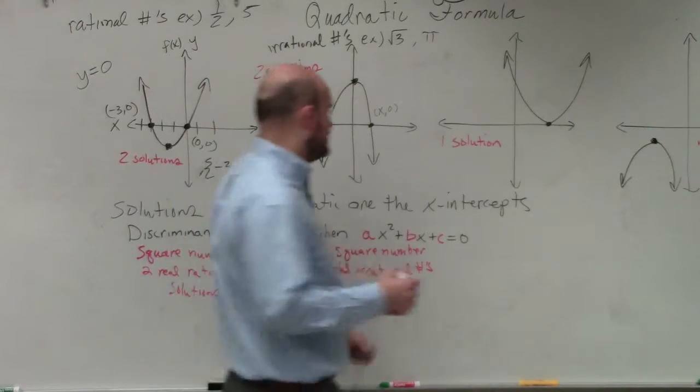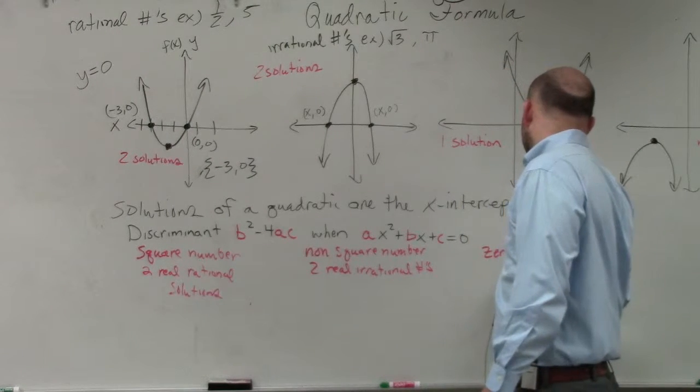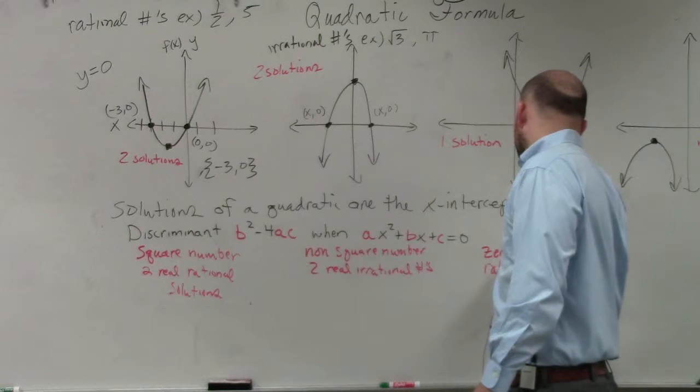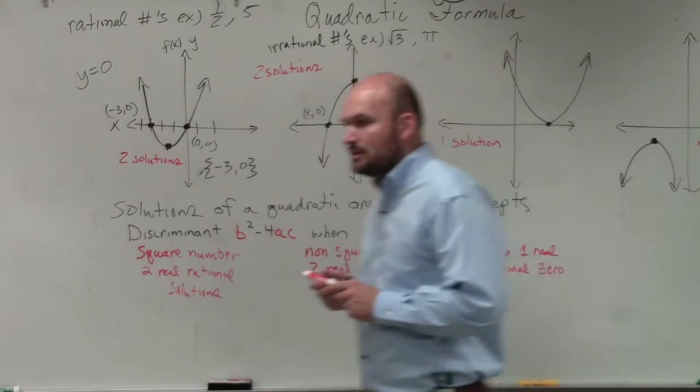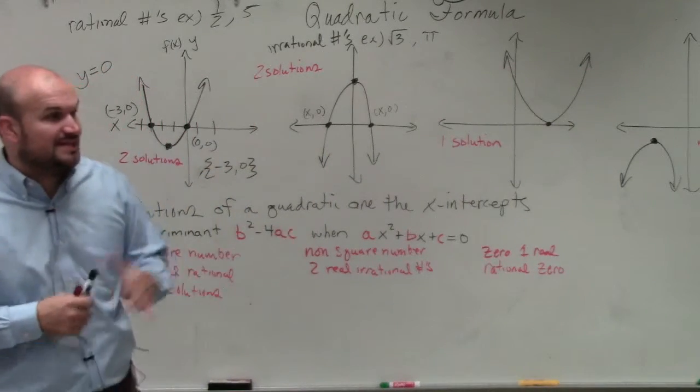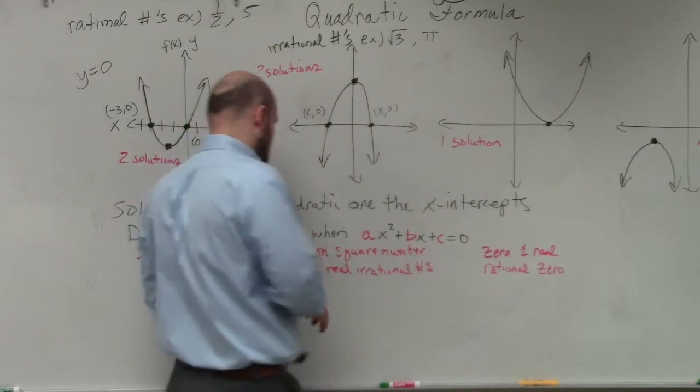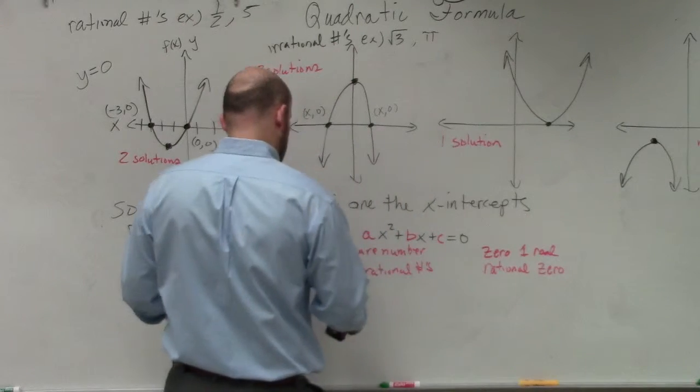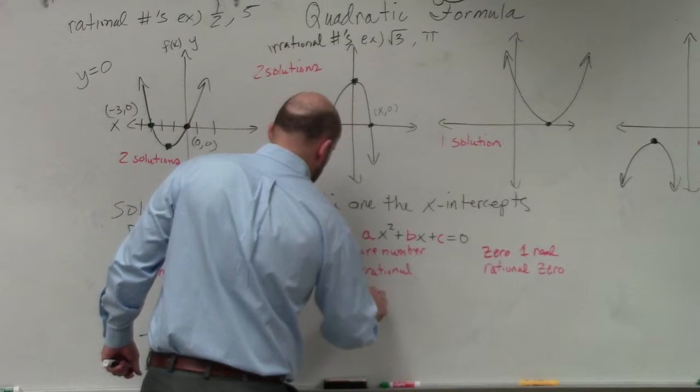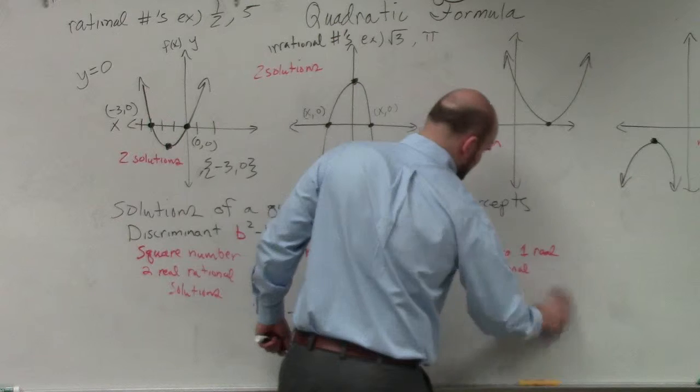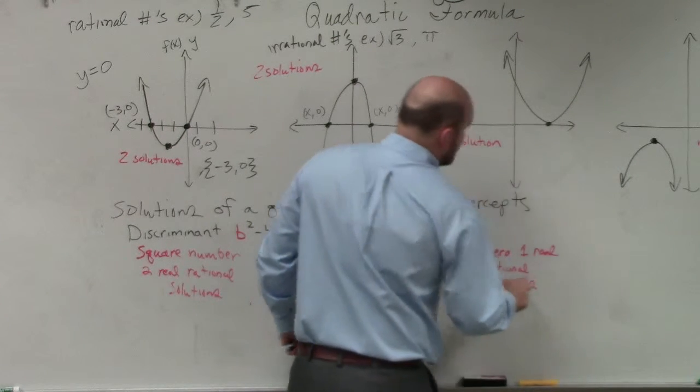What about when you have one solution? Well, if your discriminant is equal to 0, you're going to have one real rational solution. So if you're doing this discriminant thing and you get 0, then you have one real rational 0, or one real rational solution. I should be writing solutions, not numbers. And even though 0 is correct, we're going to just, we're going to use vocabulary as solutions.